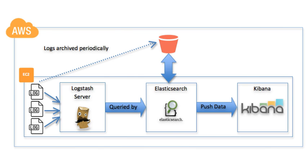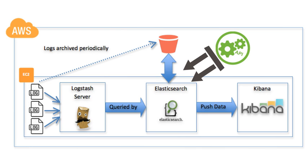In the event that there was an audit or a security incident and we need to get a hold of the old data, we can ingest syslog files from Amazon S3 into Elasticsearch using the Python API.